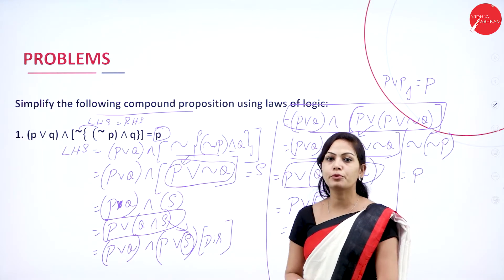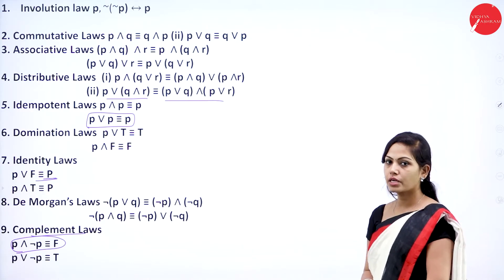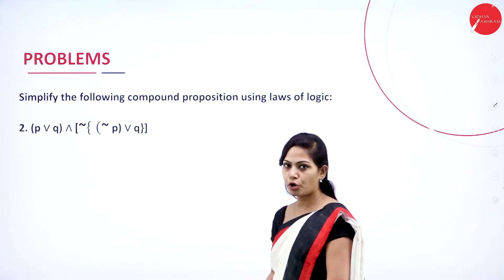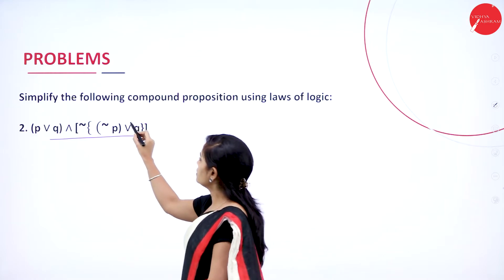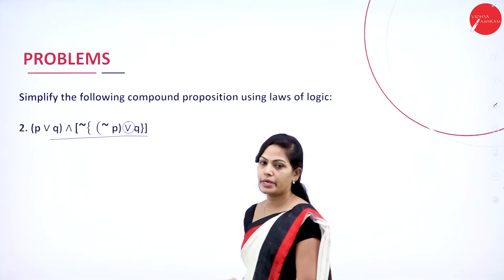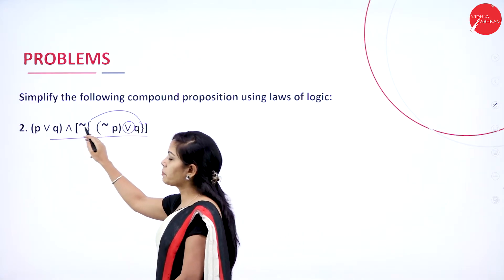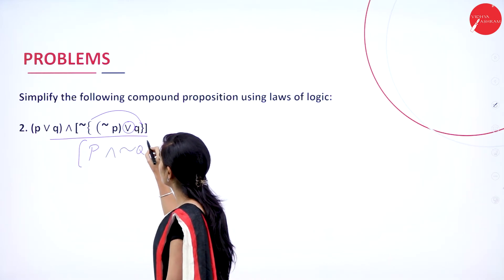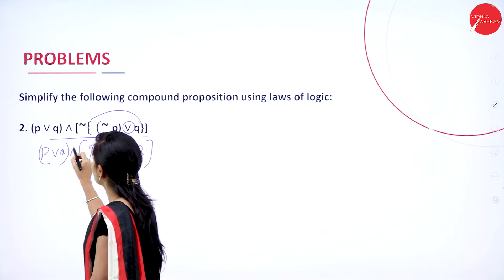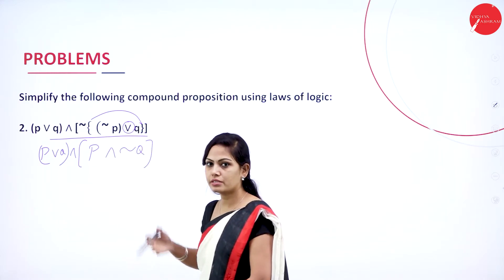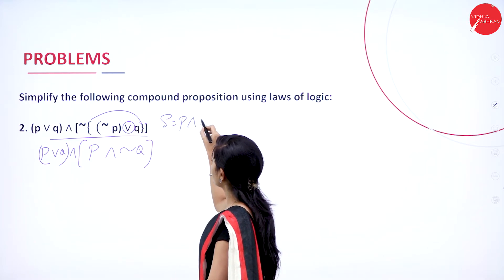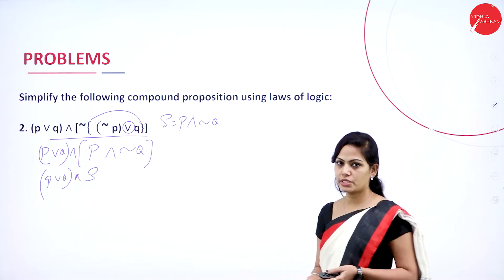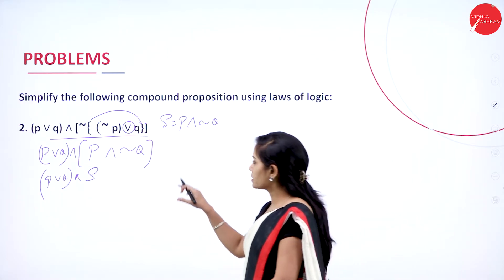By using laws of logic, we can simplify propositions. Please practice the laws and remember them so you can easily substitute and simplify the proof. The next problem has the same proposition but with OR in place of AND. First remove the flower bracket, multiply negation to negation P (giving P) and to Q (giving ¬Q), with OR changing to AND. Let S = P ∧ ¬Q. Apply the same method. This is your assignment question.